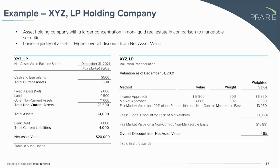Keep that in mind as we go through the next scenario — XYZ Asset Holding Company. This one has a larger concentration in non-liquid real estate compared to the smaller, more liquid marketable securities. In general, lower liquidity of assets equals a higher overall discount from net asset value. We have the same $20 million net asset value, but our asset composition is quite different — $23.5 million of non-current assets, very little cash, and some debt associated with those fixed assets and land.